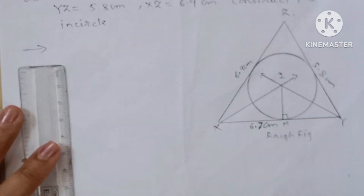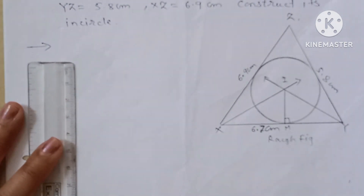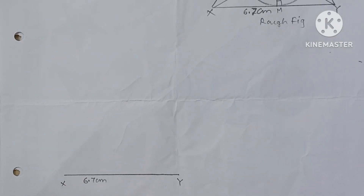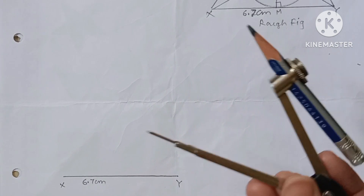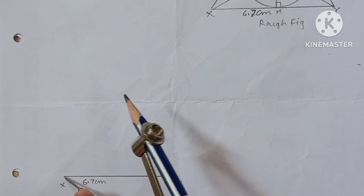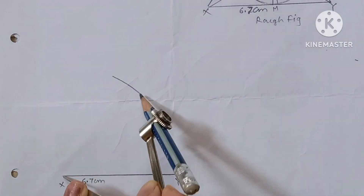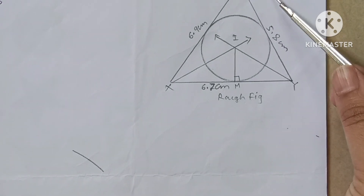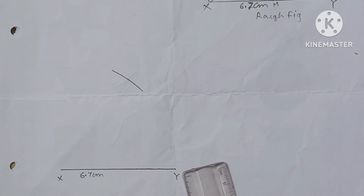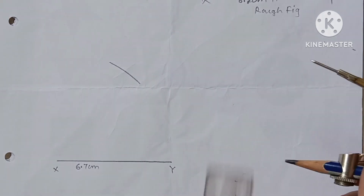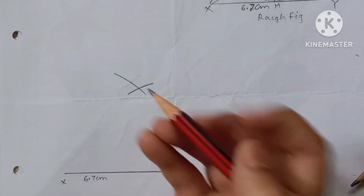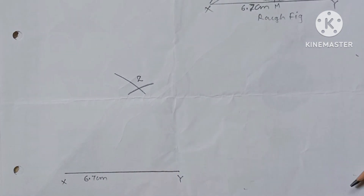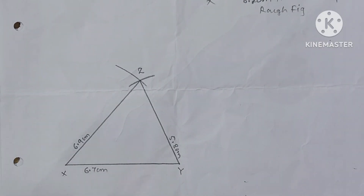In the fair figure, first draw the base XY = 6.7 cm. Now take 6.9 cm distance in the compass, keep your compass point on X, and make an arc. Now take 5.8 cm in the compass, keep your compass point on Y, and make an arc. This intersection is your point Z. Join ZX and ZY.